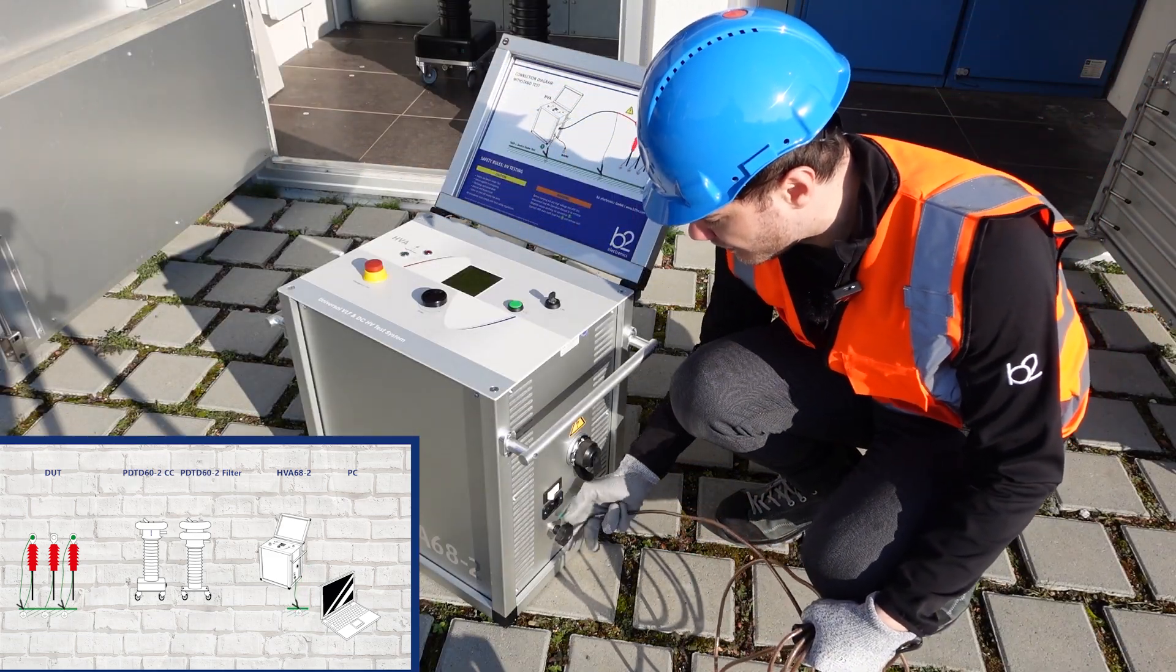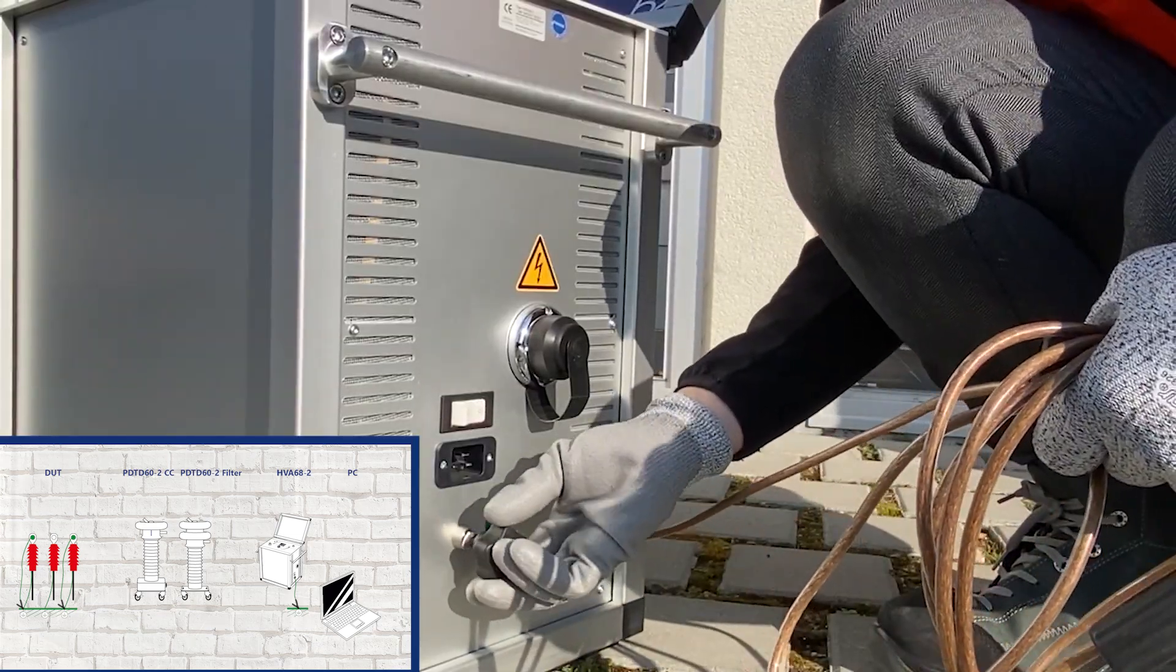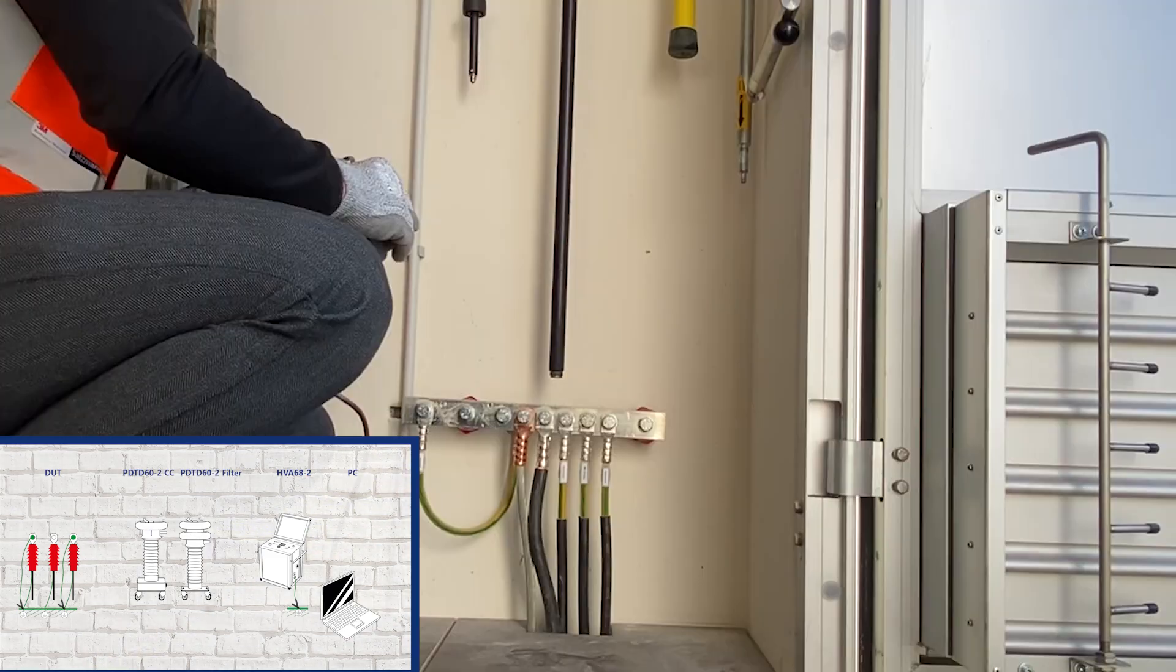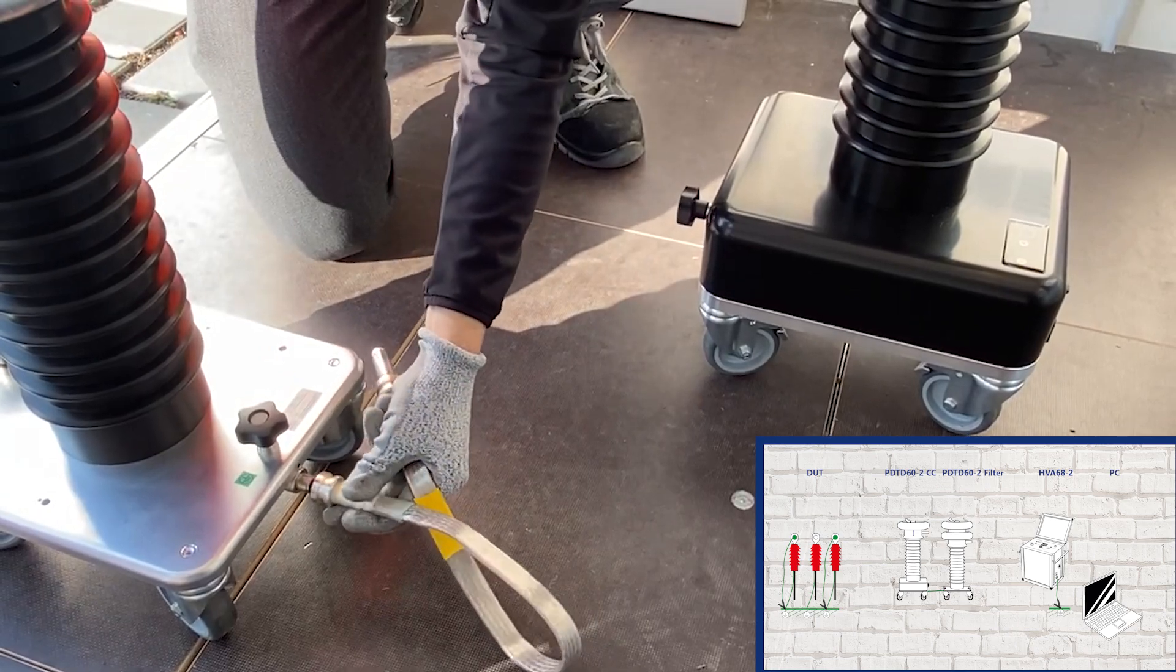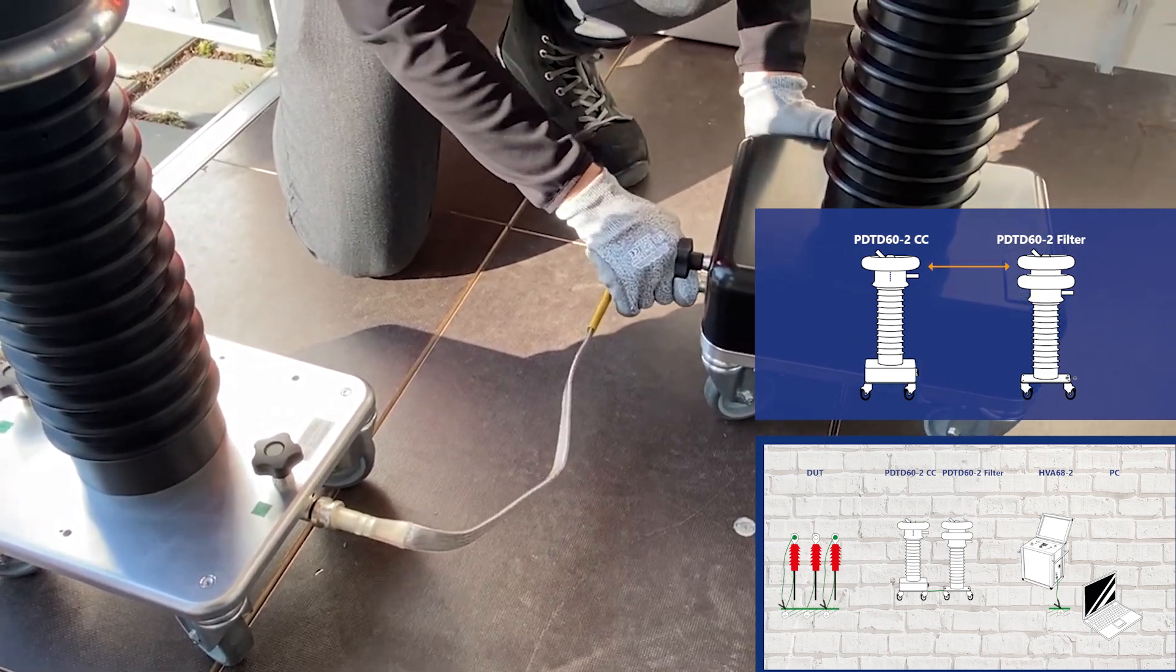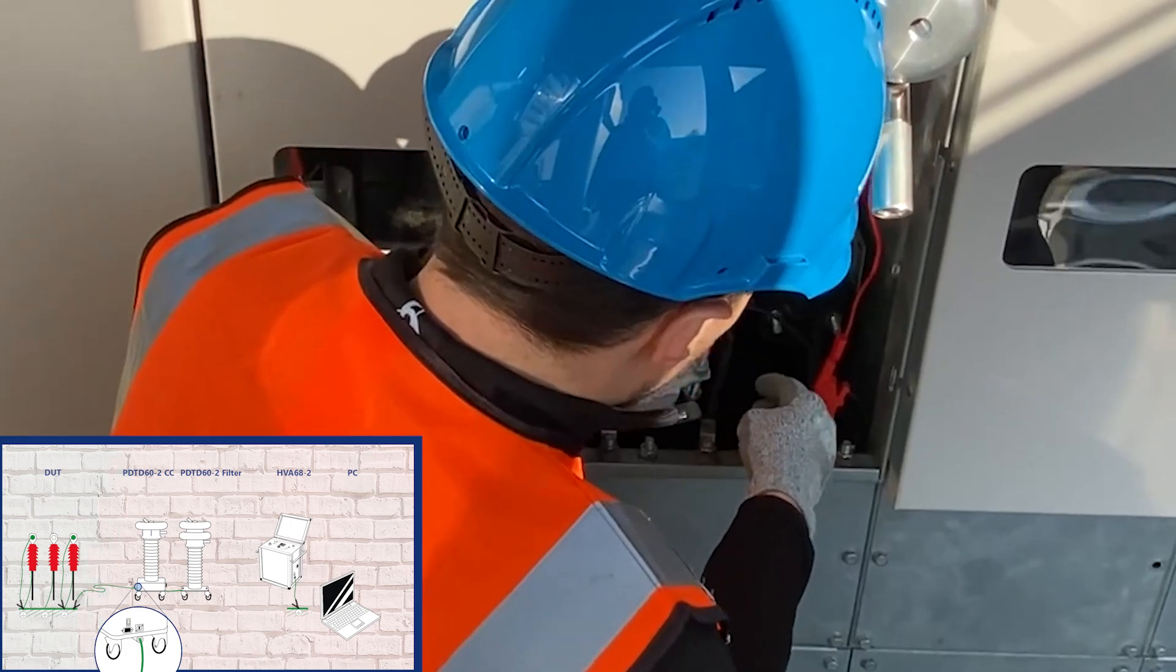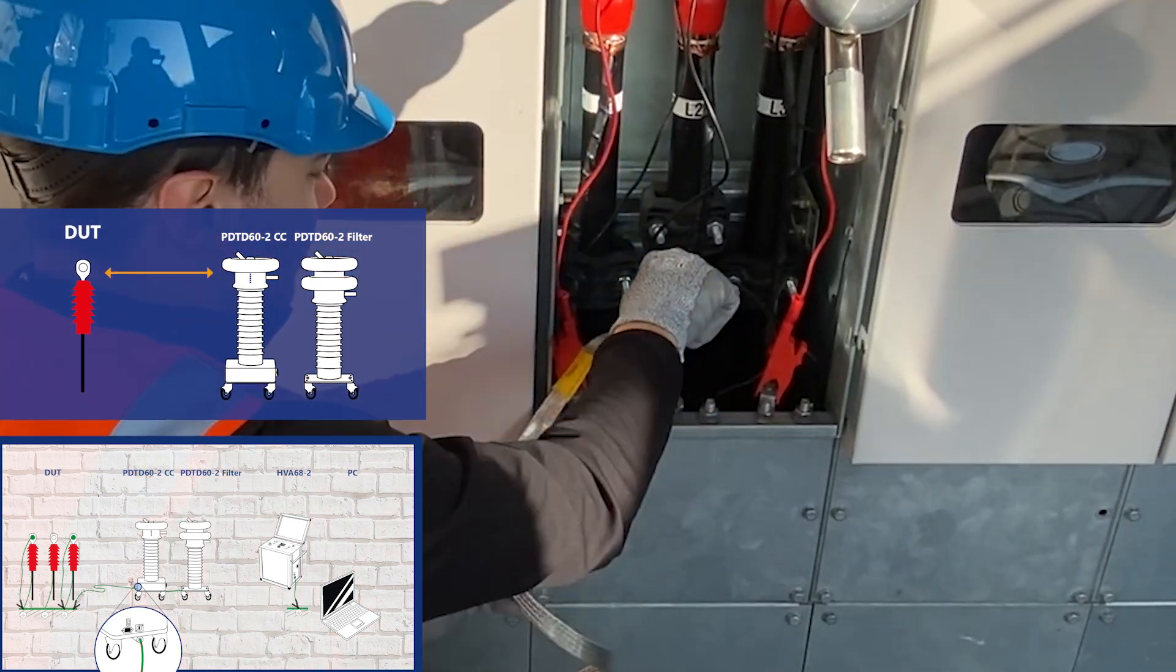Then the earth connections of the HVA. Also between the PD2 filter and the PD2 CC. Please make sure that the earth connections are as short as possible. Then connect the earth connections between the PD2CC and the DUT. This should also be as short as possible and at the same point.